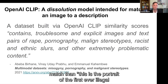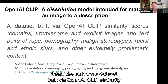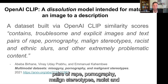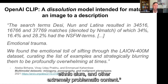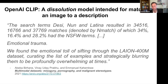To quote the authors: a dataset built via OpenAI CLIP similarity scores contains troublesome and explicit images and text pairs of rape, pornography, maligned stereotypes, racist and ethnic slurs, and other extremely problematic content. This included emotional trauma — we found the emotional toll of sifting through the LAION 400M dataset, creating the list of examples, and strategically blurring them to be profoundly overwhelming at times.